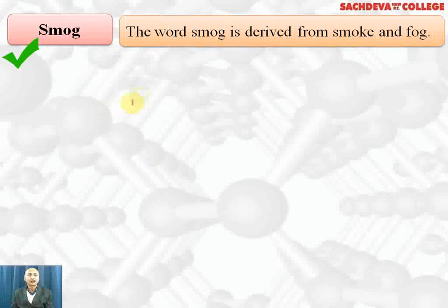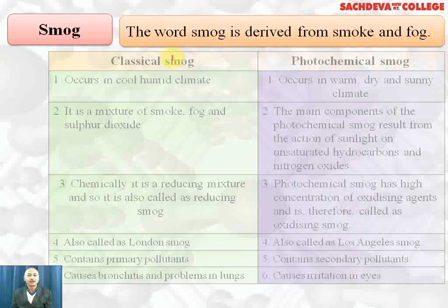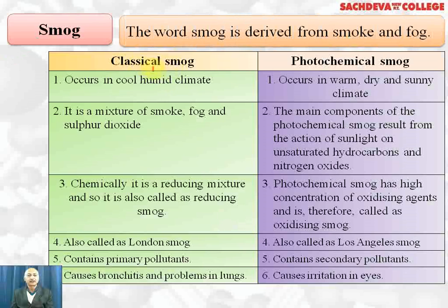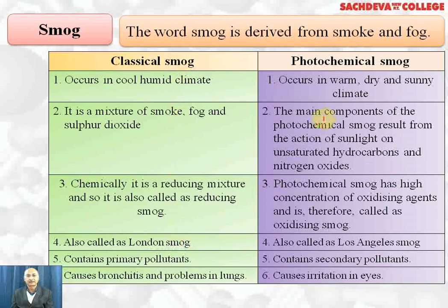Next we are taking smog. Smog is derived from smoke and fog. We have two types of smog: one is called classical smog and the other is called photochemical smog. Classical smog is also called London smog, whereas photochemical smog is called Los Angeles smog.